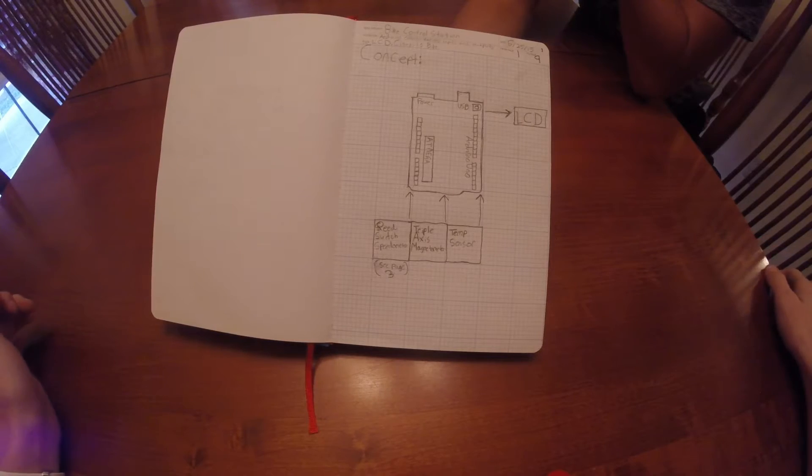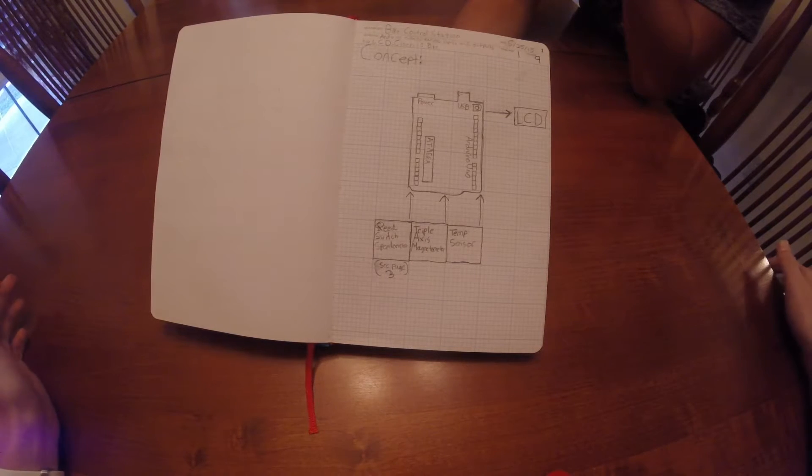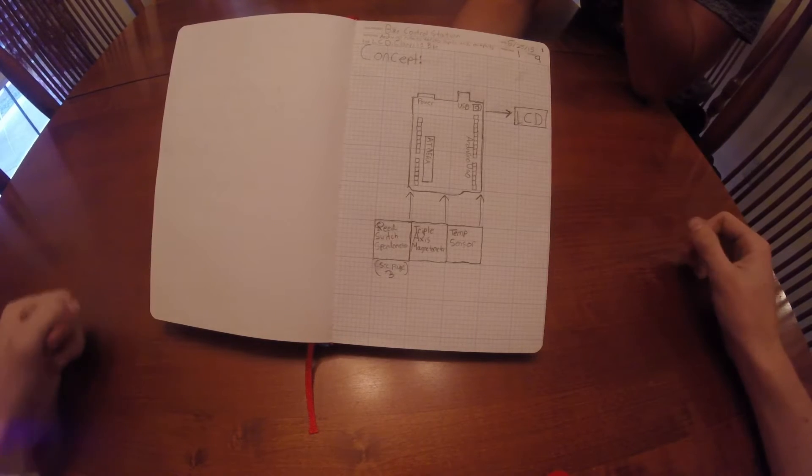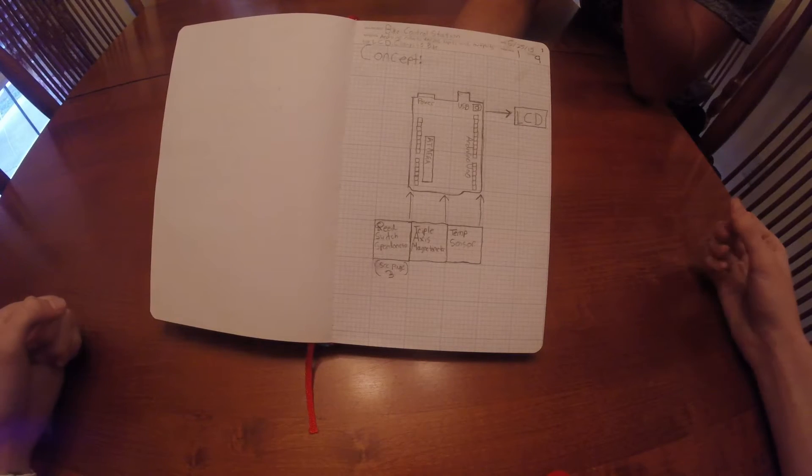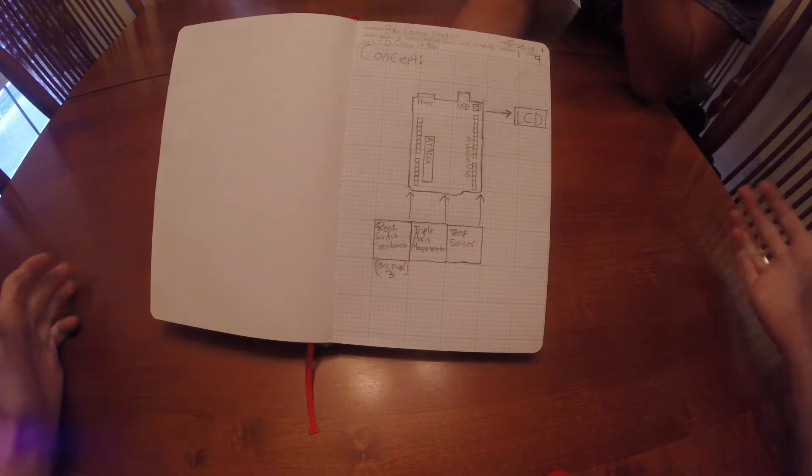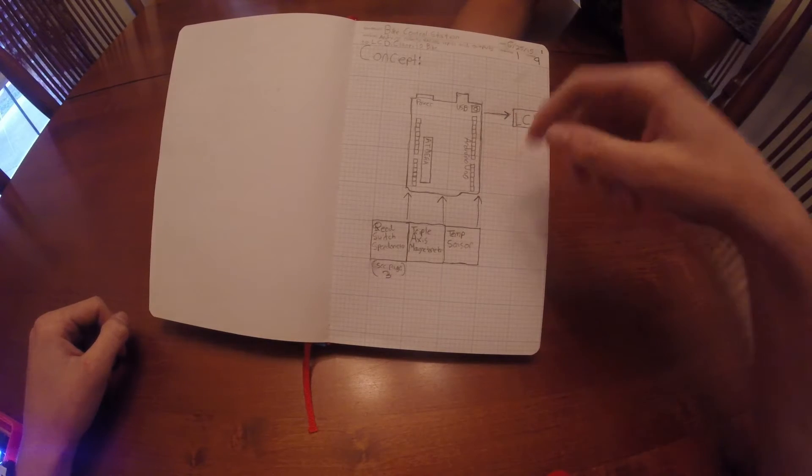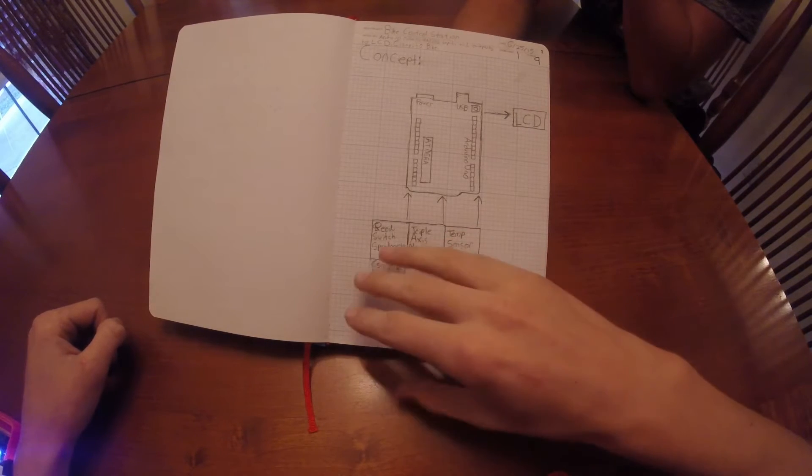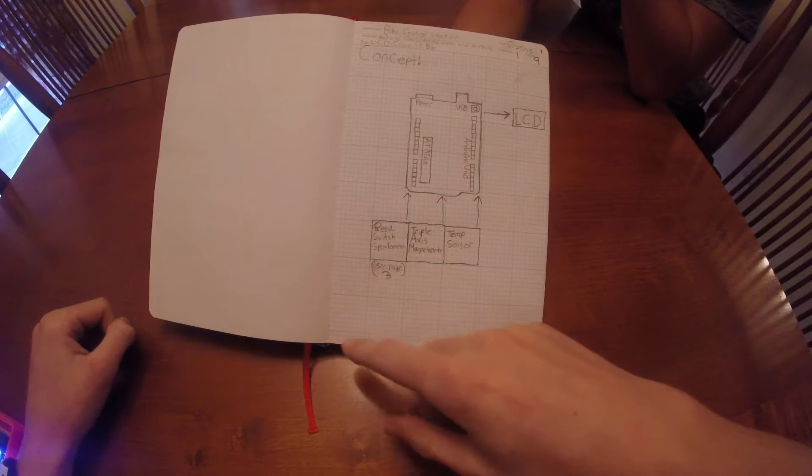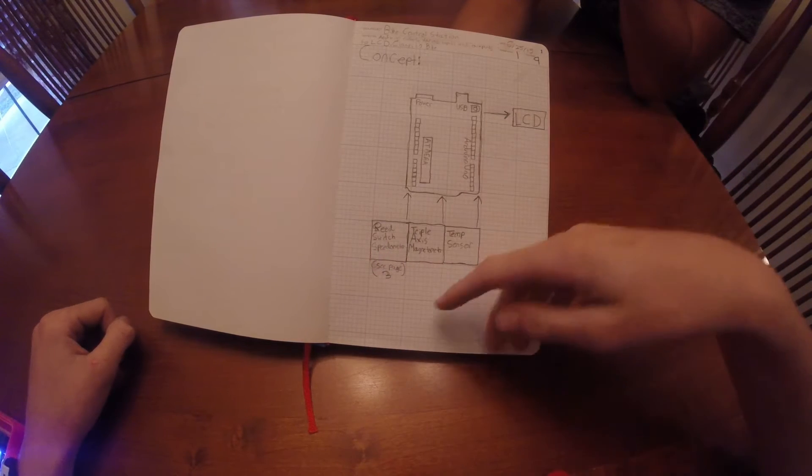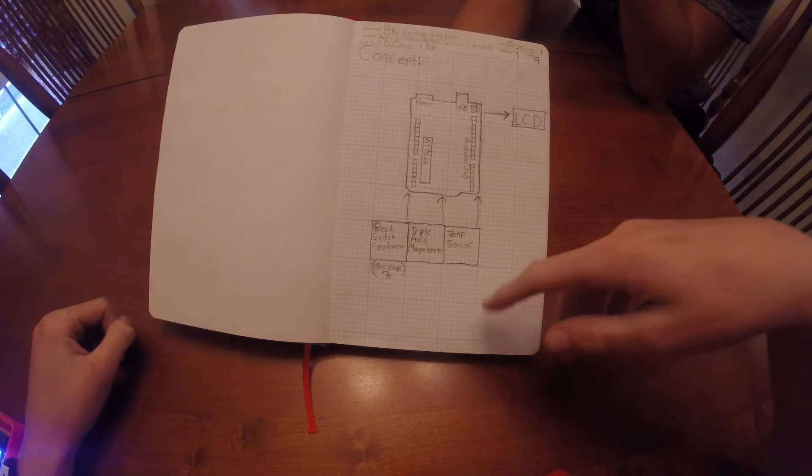So the first step in any project is to come up with an idea. So that's what I did here and I wrote it down on paper. Basically, I wanted something that would attach to my bike and be able to tell me various information through a screen. So I decided to get an Arduino and I figured I would hook up various sensors to it. For example, a reed switch speedometer, which I'll explain about later, a triple axis magnetometer, and a temperature sensor.